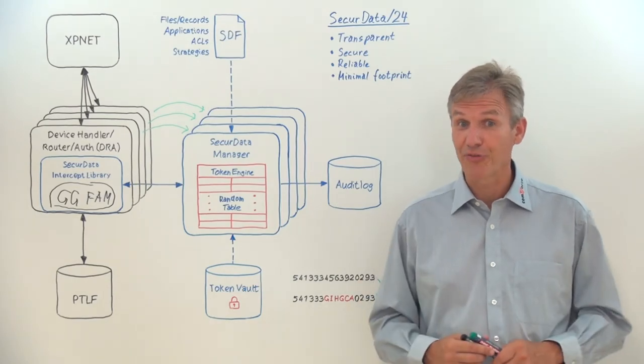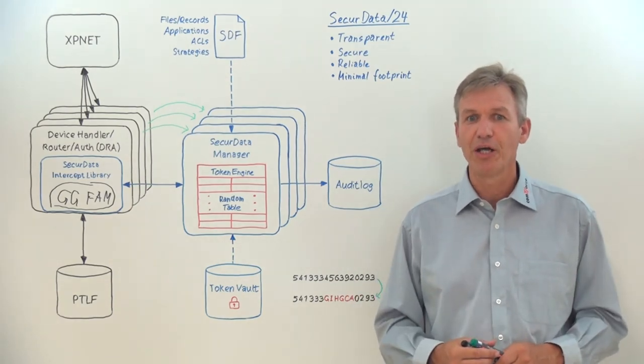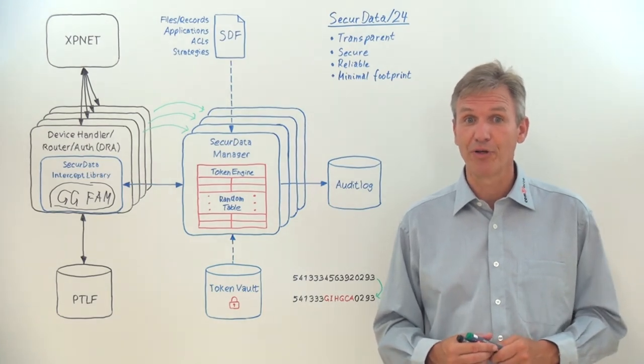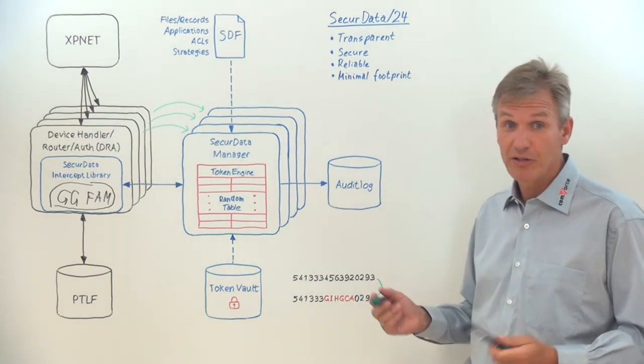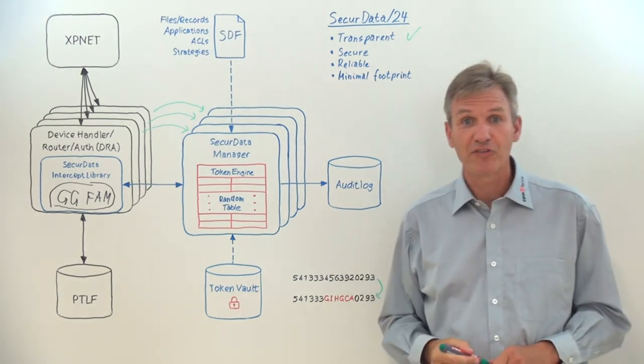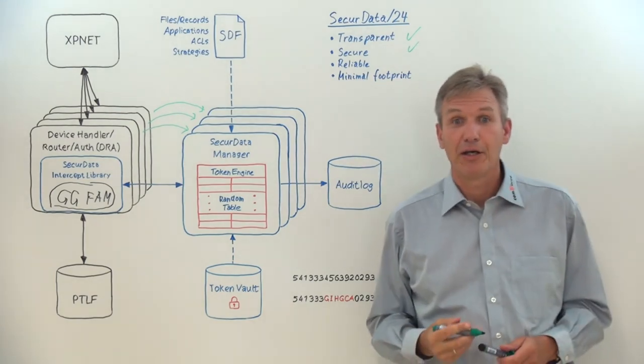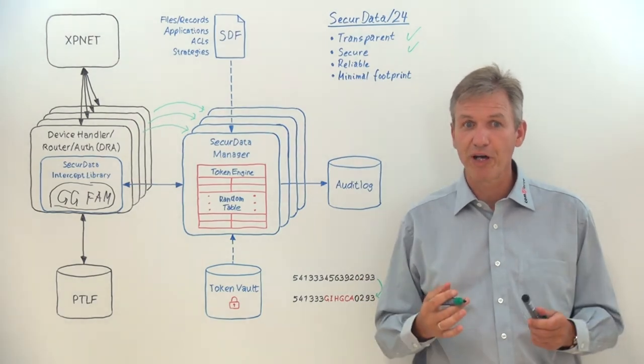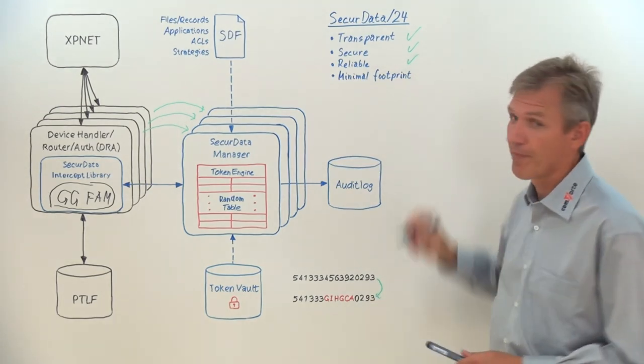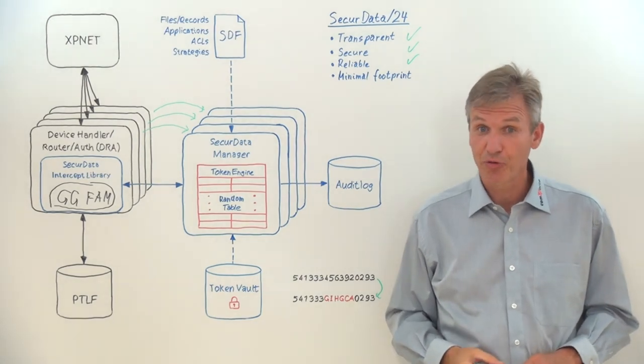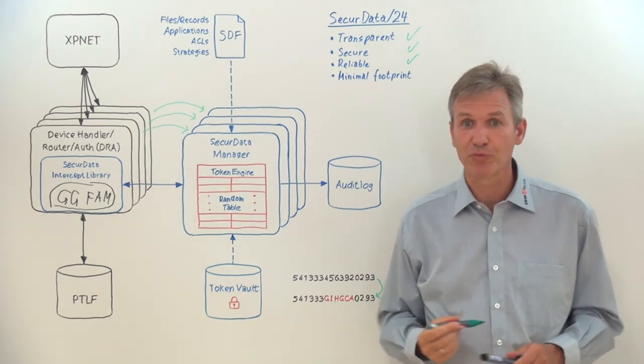Let me now summarize the key takeaways of this session. The SecureData24 architecture ensures that any Base24 environment can be easily made PCI 3.4 compliant. SecureData is completely transparent to Base24 and any disaster recovery solutions. It has a built-in secure tokenization engine. It leverages the non-stop fault-tolerant architecture to provide the level of reliability that Base24 users require. And last but not least, due to its outstanding performance and scalability, SecureData has only a minimal footprint on the Base24 transaction processing.